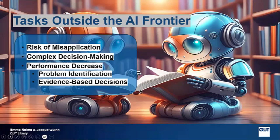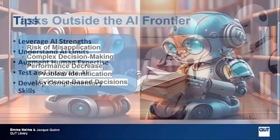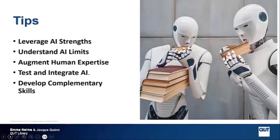Making robust decisions requires actual subject expertise. The tips Ethan Mollick comes up with include looking at ways to leverage AI's strengths, using AI for structured tasks where it excels, and recognizing its boundaries — especially for tasks needing deep expertise and nuanced decision-making. Combine human skills with AI capabilities. Learn how to effectively test and integrate new AI tools and focus on developing skills that AI cannot replicate.